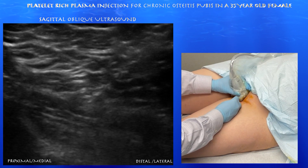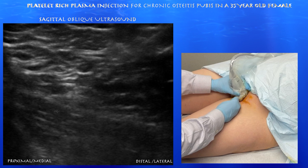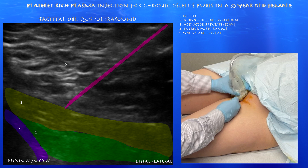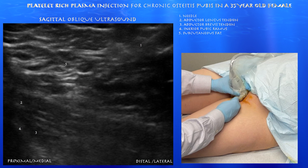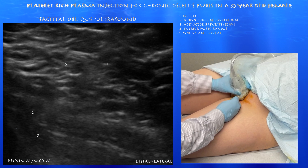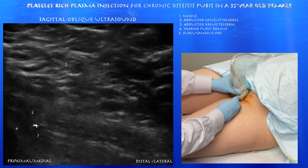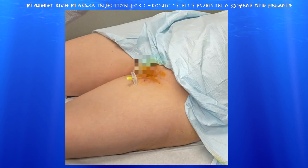The needle is starting to enter into the proximal aspect of the adductor longus, perhaps in the tendon, just near the inferior pubic ramus. The needle tip is just superficial to the tendon at this point. We're continuing to advance the needle, and there appears to be some flexibility within this tendon and muscle, as the needle is essentially pushing that tendon and muscle downwards.